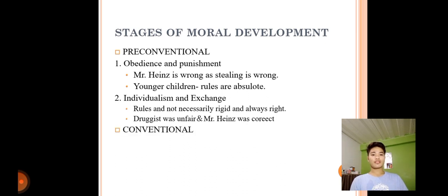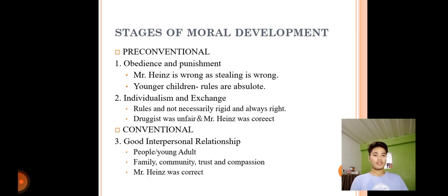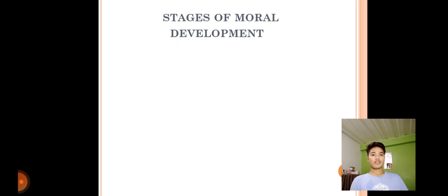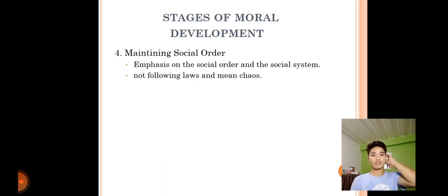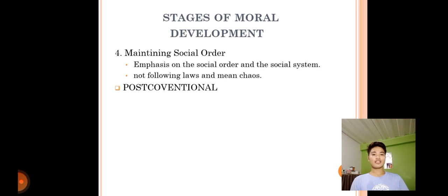The second level is conventional, with stage three being good interpersonal relationships. People, especially young adults, consider family, community, trust, and compassion — and may say Heinz was correct. Stage four focuses on maintaining social order, with emphasis on the social system. Not following rules and being dishonest is wrong at this stage.